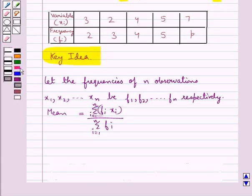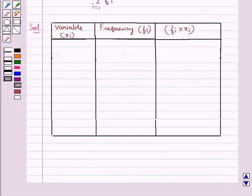Now we move on to the solution. To calculate the mean, we need to make a table. In this table we have the variable xi, the corresponding frequency fi, and the product of the variable xi and frequency fi.